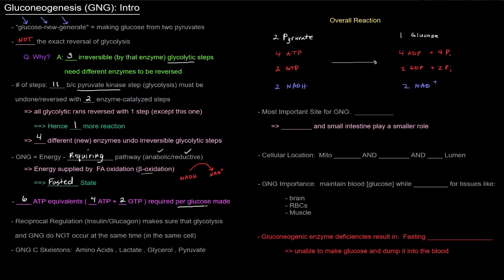The reciprocal regulation with hormones like insulin and glucagon make sure that glycolysis and gluconeogenesis, which are opposing pathways, do not occur at the same time in the same cell. There are cases in which you could have the two pathways occurring at the same time in separate tissues, different cells, but it would make no sense to be breaking down and making glucose at the same time in the same cell.